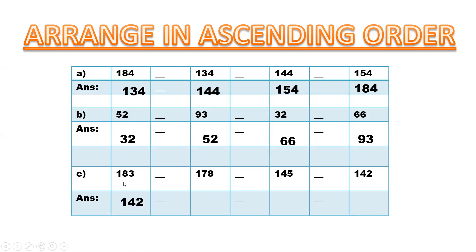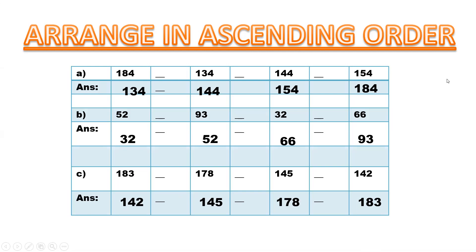Now the third question: 183, 178, 145, 142. So it will be the first one — this is 145, but this is 142. So definitely 142. Then the second will be 145. Then from 183 or 178, this is 7 and this is 8, so obviously it will be 178. Then 183 is last. Answers: 142, 145, 178, and 183. Did you understand how to arrange in ascending order?